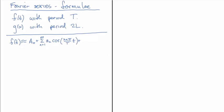And then we also want to add n going from 1 to infinity of bn sine of the same expression, 2n pi over T, little t.